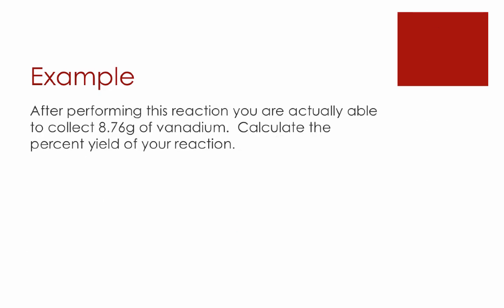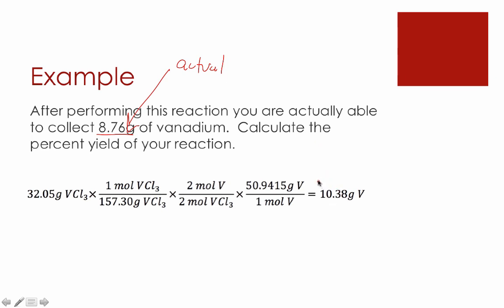So this would be the second part of a stoichiometry problem that involves percent yield. After performing the reaction, you are able to actually collect 8.76 grams, as opposed to the 10 grams we should have collected. Your job will be then to calculate the percent yield of the reaction. Well, to calculate the percent yield, we need the theoretical and actual yields. We've got our actual yield right here. The theoretical yield, again, comes from our stoichiometry calculation. This is our theoretical yield.